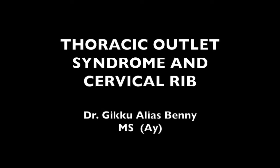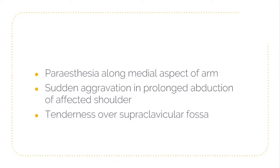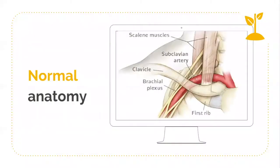In this video we shall discuss Thoracic Outlet Syndrome. The patient presents with paresthesia along the medial aspect of the arm, with sudden flare-up or aggravation of symptoms when the arm is abducted above the head — that is, when the hand is placed in complete range of abduction of the affected side. On palpation, there is tenderness over the supraclavicular fossa, and the provisional diagnosis is cervical rib.